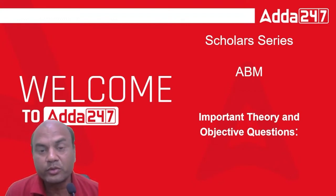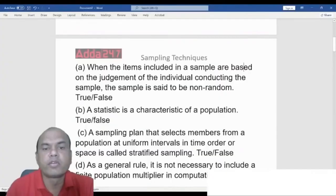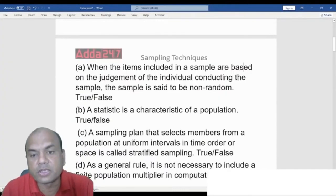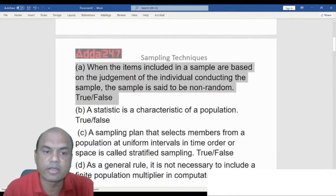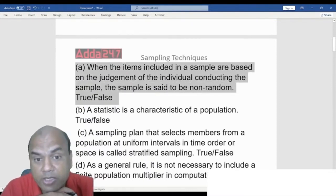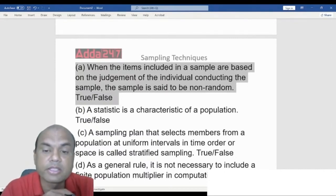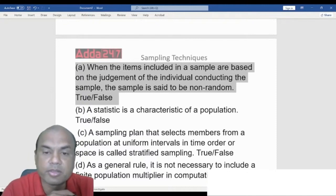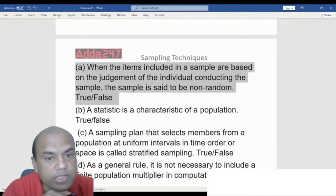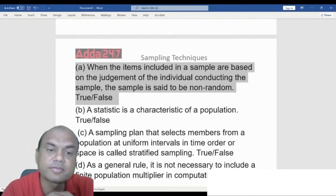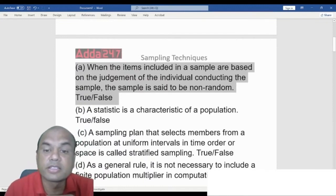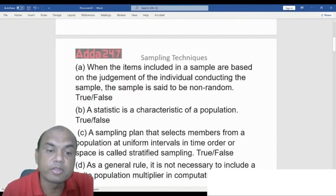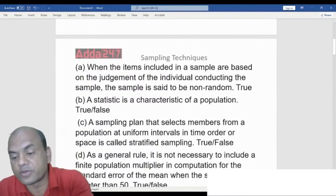True or False: When the items included in a sample are based on the judgment of the individual conducting the sample, the sample is said to be non-random. The answer is True. This is a type of non-probability sampling, so the answer is true.